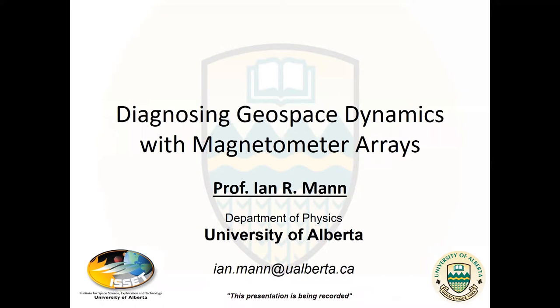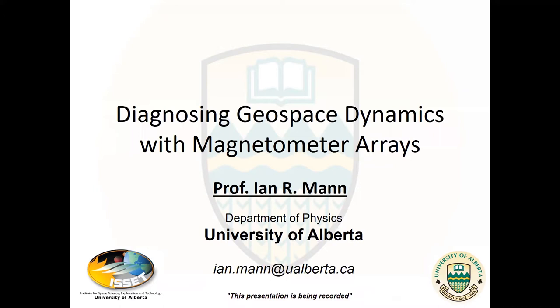After spending five years as the PI of the UK SubNet Array, he moved to Canada in 2003 and has served as PI of the CARISMA Magnetometer Array for nearly 18 years. He was a founding member of the Ultra Large Terrestrial International Magnetometer Array — the ULTIMA consortium — having previously served as its chair. He is currently the chair of the United Nations expert group on space weather, and just three days ago he was elected as a Fellow of the Royal Society of Canada. Congratulations.